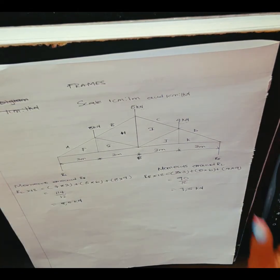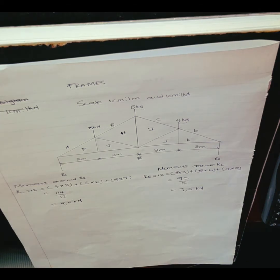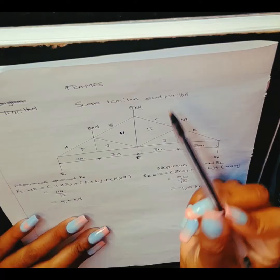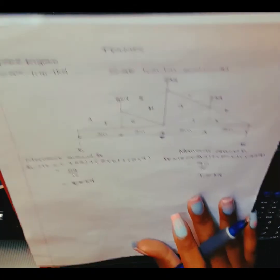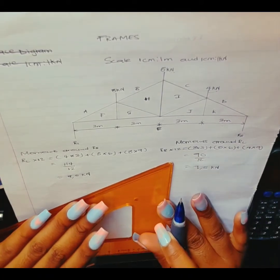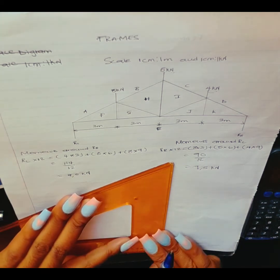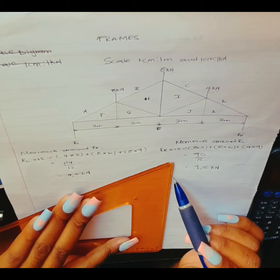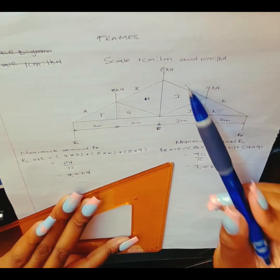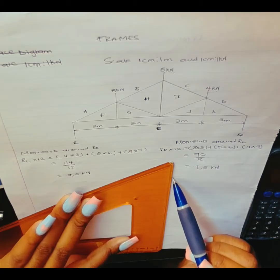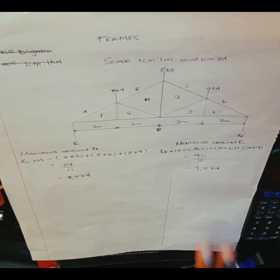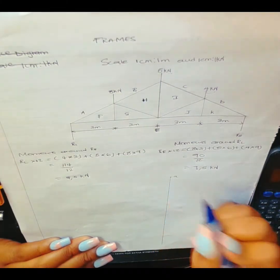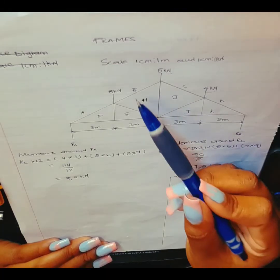Now that we are done calculating our reactions, we are going to draw a force diagram using a scale of 1 centimeter to 1 kilonewton. Firstly, I am going to draw a vertical line that will give me points A, B, C, D, and E. Here is my vertical line, and here is point A.